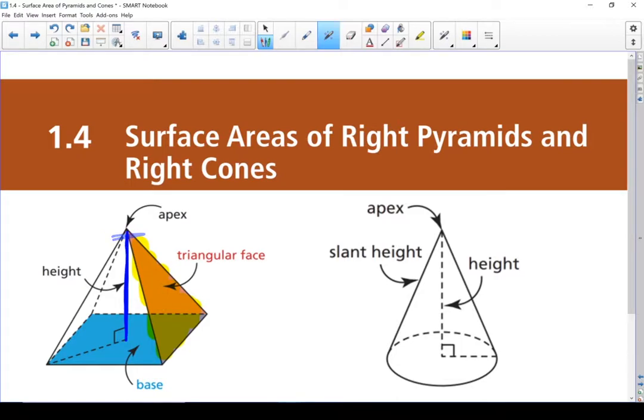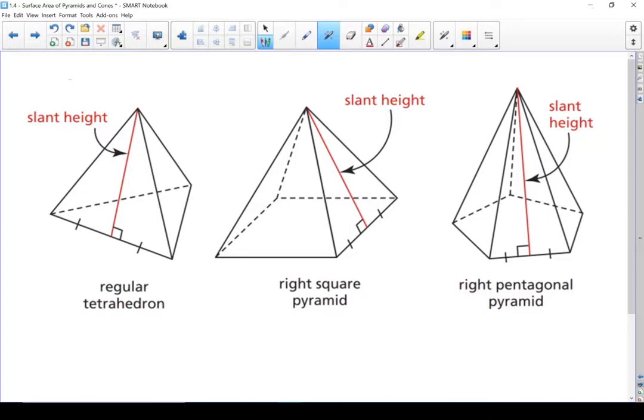And we also have a height. Remember, height is from the center of the base. And in order for it to be considered a right pyramid, that height has to be at 90 degrees to the base. Just like in the cone, we also have a slant height.